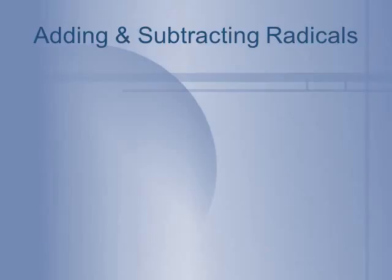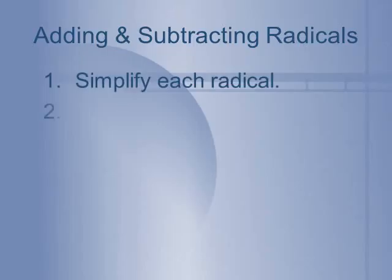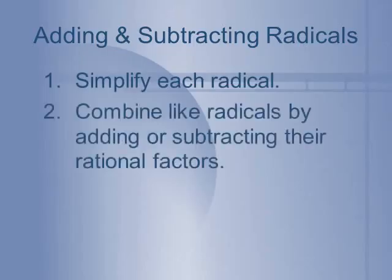So I have a step chart for adding and subtracting radicals. First, we want to simplify each radical. So if anything can come out of the house, we want to take it out first. And we want to combine like radicals by adding or subtracting the rational factors. So the rational factors is what's outside the house. So if I have 2 square root 7 plus 5 square root 7, I'm going to add the 5 and the 2 together to get 7 square root 7. That's how we combine like terms.